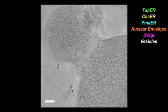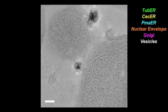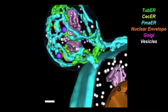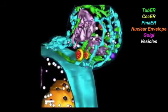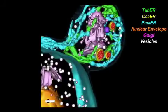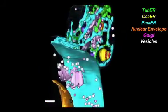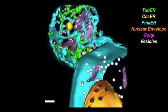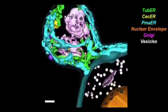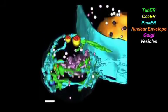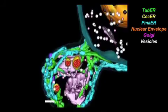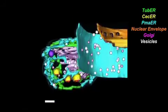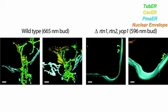However, curved ER tubules were still pulled into the growing buds of yeast lacking reticulins and YOP1. In larger buds, they still had plenty of tubules and membrane curvature. The tubules were being pulled out of the massive flat cisternae in the mother, presumably by a process involving actin and myosin but not reticulins and YOP1. We concluded that reticulins and YOP1 are maintaining membrane curvature rather than generating it.